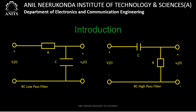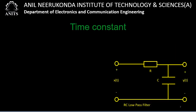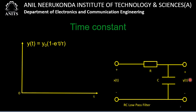Now let us discuss the important concept of time constant. In an RC low pass filter circuit where output is taken across the capacitor, the output is y(t) and the input is x(t). The standard charging equation is: y(t) = Y₀ × (1 − e^(−t/τ)), where τ is the time constant given by τ = RC.